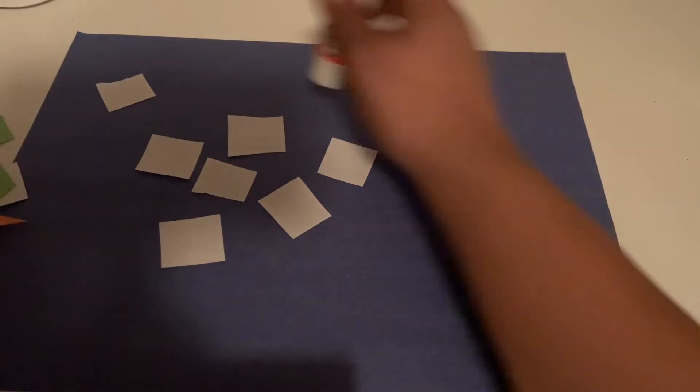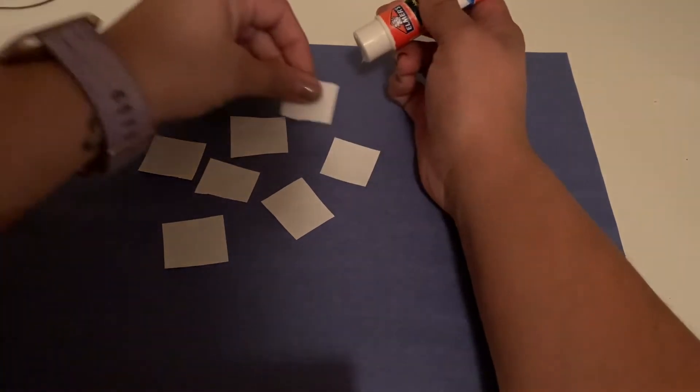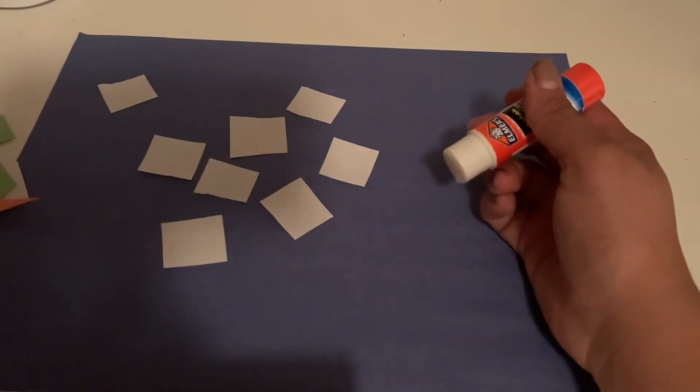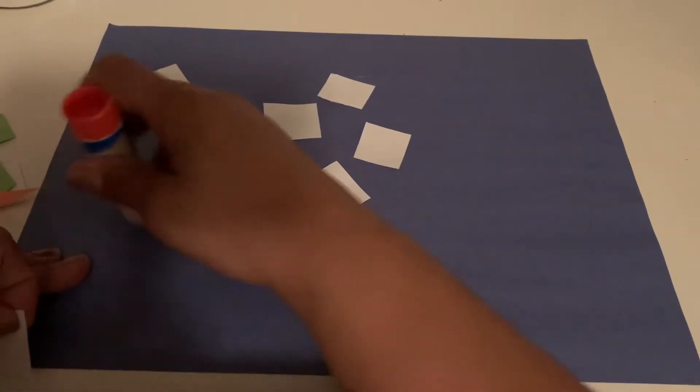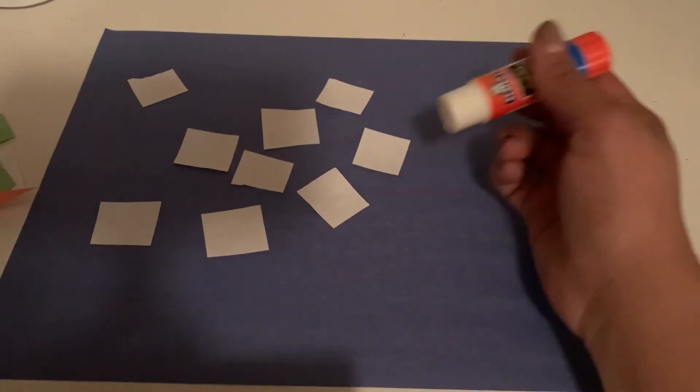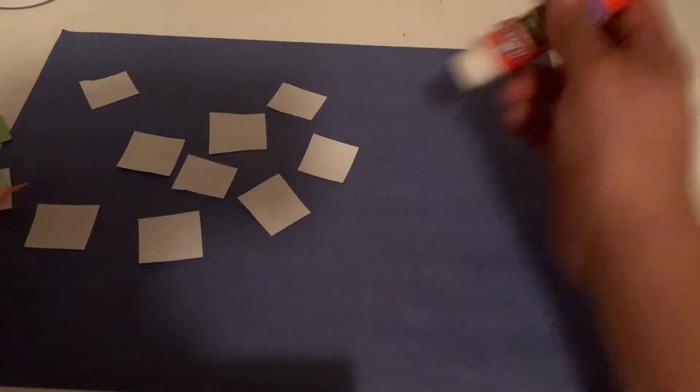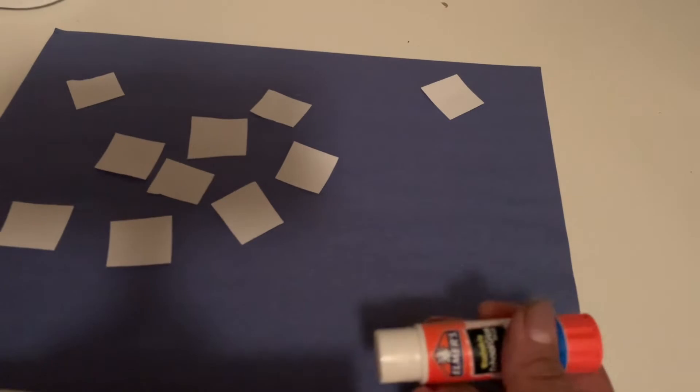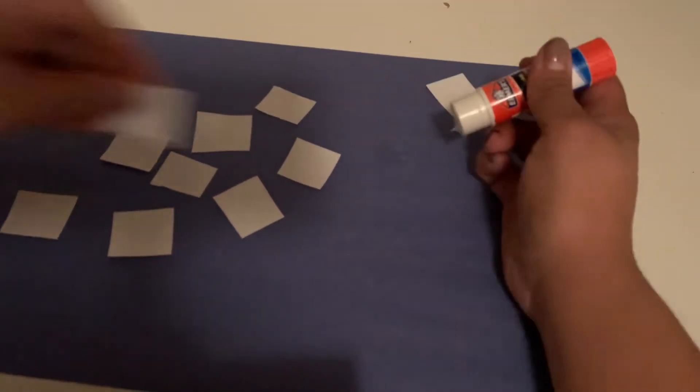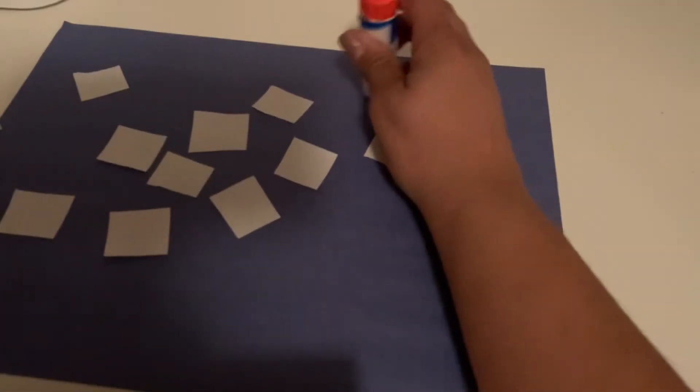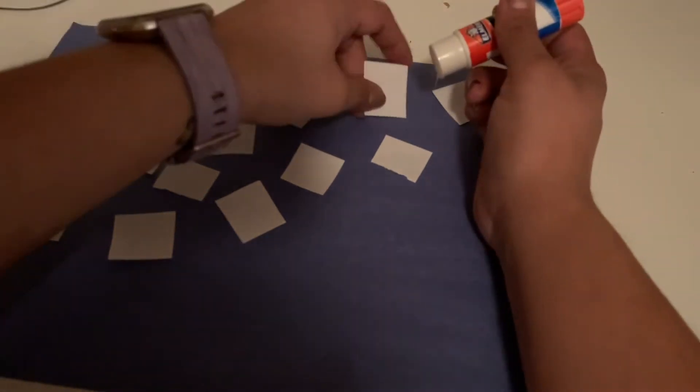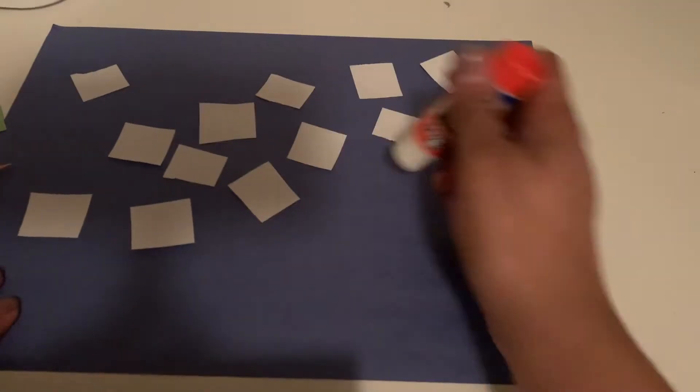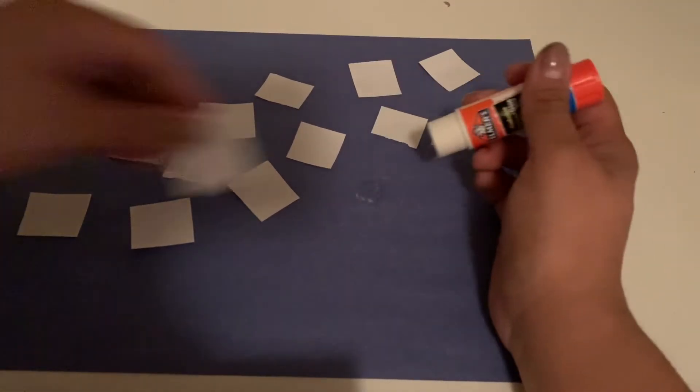So we're just going to keep going. We're not going to cover up all of our paper, but we do want it around the entire paper. So you want some in the corner, some at the bottom, in the middle. Okay, he's melting, so we're going to put him everywhere.